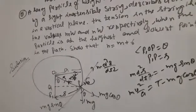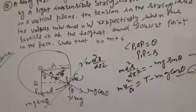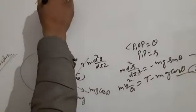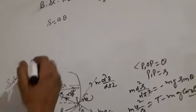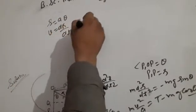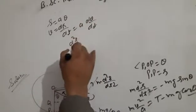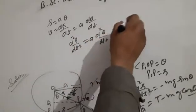Equation 1: d²S upon dt² equals minus g sin theta. Equation 2: mv²/A equals T minus mg cos theta. Using the relation S equals A times theta, we get v equals A times d theta upon dt, and d²S upon dt² equals A times d² theta upon dt².